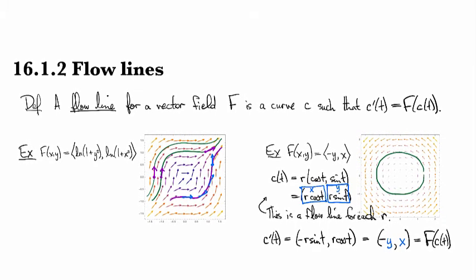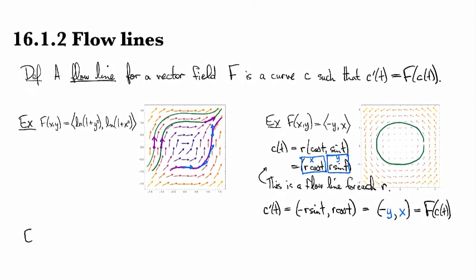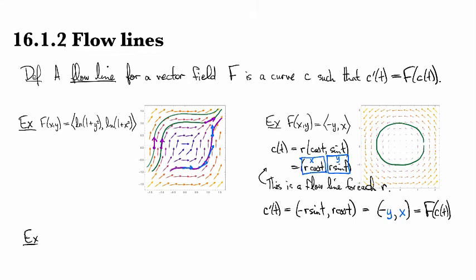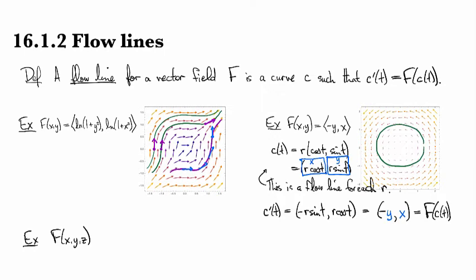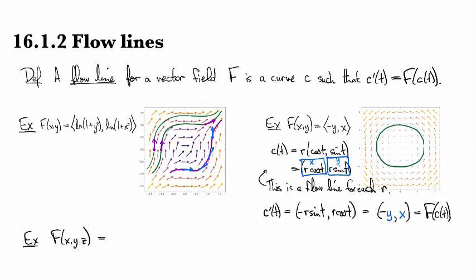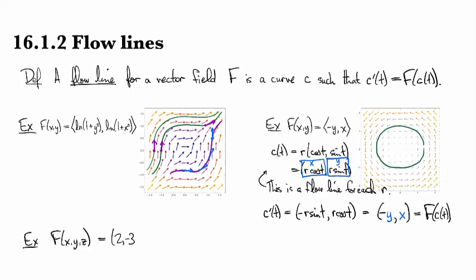Let's look at maybe another example. If we have now, let's take a three-dimensional vector field. Here's a vector field on R3 and we'll just take it to be a constant vector field: two, minus three, one.